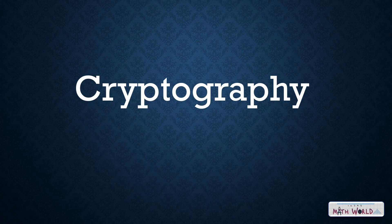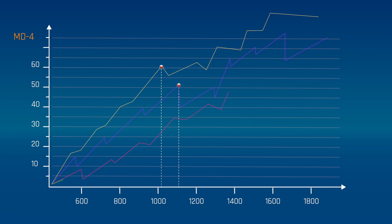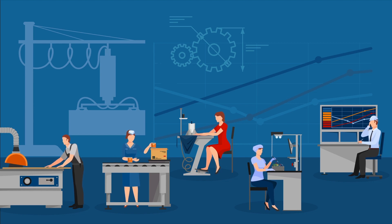For example, the Fibonacci sequence, which is related to Pascal's Triangle, can be used to generate a random sequence of numbers that can be used as encryption keys. These are just a few examples of how Pascal's Triangle is used in real life. As you can see, Pascal's Triangle has many practical applications in various fields, making it an essential concept to understand for anyone interested in mathematics and its applications.